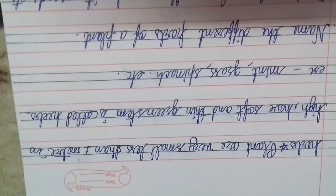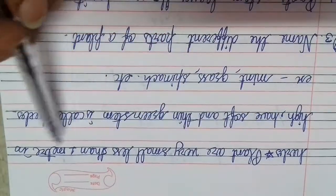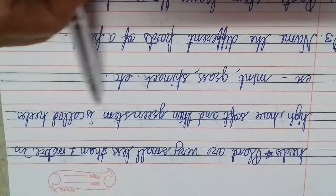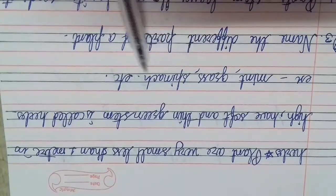Herbs - plants that are very small, less than 1 meter in height, and have soft and thin green stems are called herbs. Examples: mint, grass, spinach, etc.